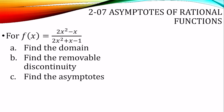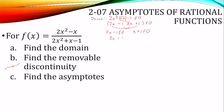For this function, let's find the domain, the removable discontinuity — which on a graph is a little hole — and the asymptotes. To find the domain, take the denominator and make it not equal to 0. Factoring gives us factors with a negative 1 and a positive 1. We get 2x and a negative x, which equals 1x for the middle term — that works. Taking each factor not equal to 0, we get x doesn't equal 1/2 and x doesn't equal negative 1. So the domain excludes x equals negative 1 and x equals 1/2.